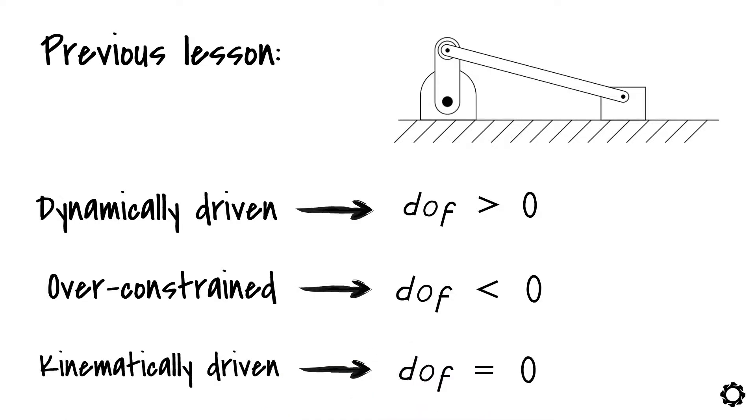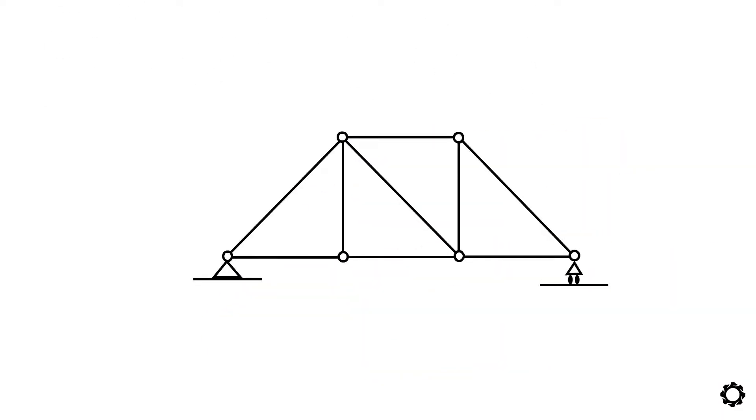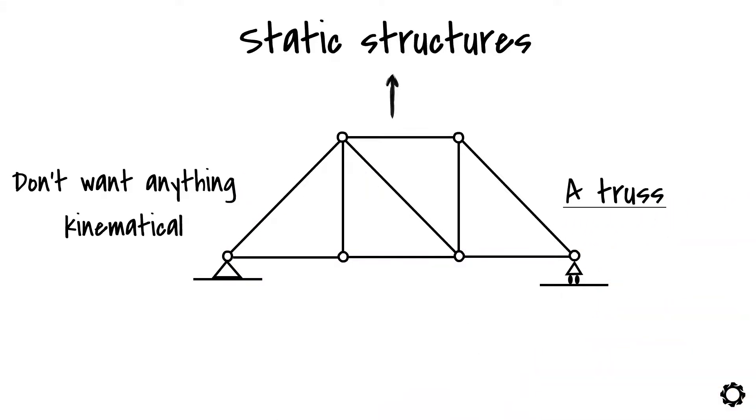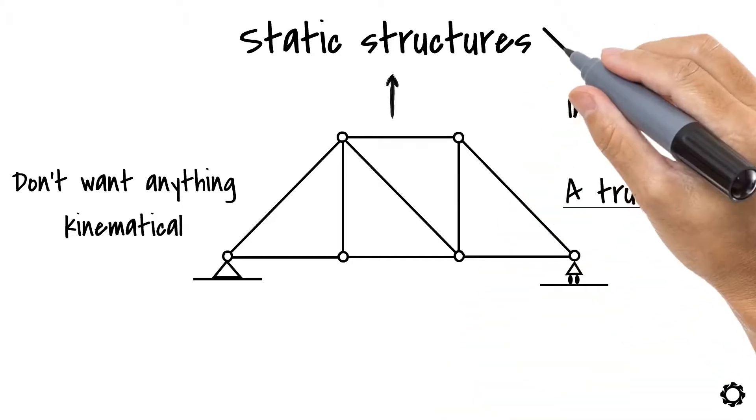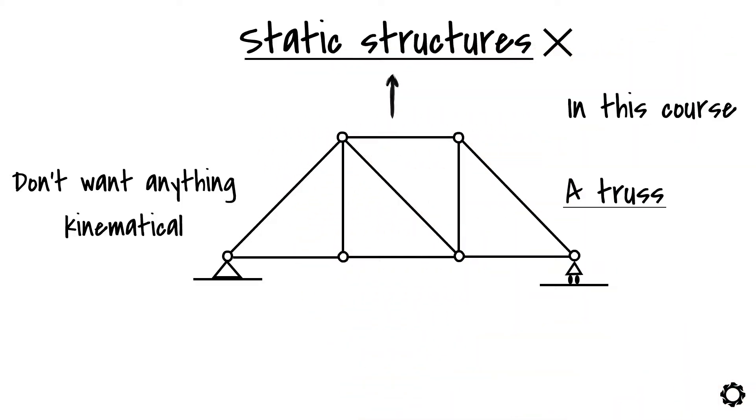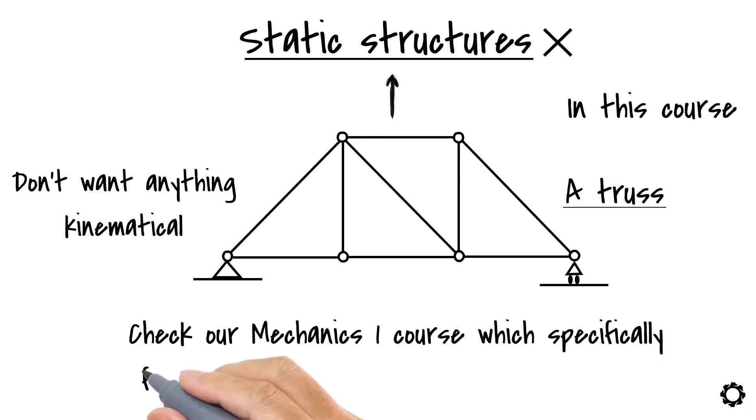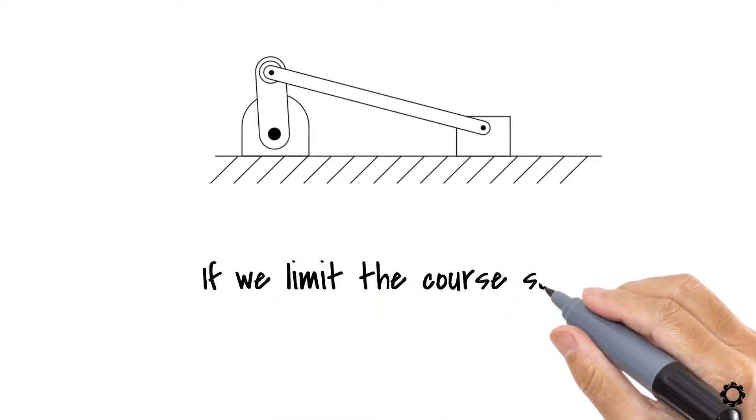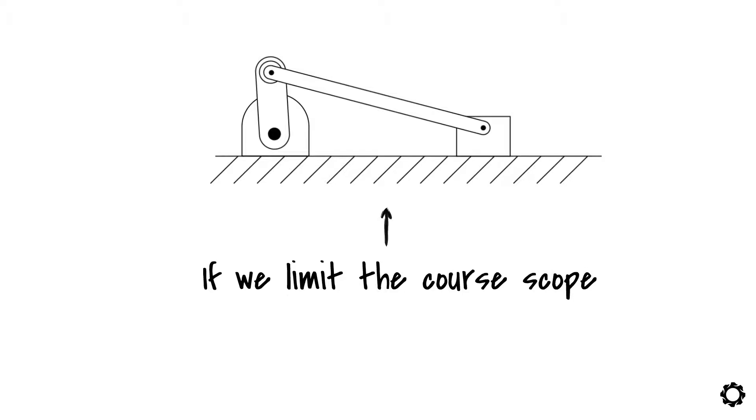Now let me stop right there and expand this thought a little. You see, kinematically means that something is related to movement. However, we have systems with zero degrees of freedom. These systems are static structures, a truss for example, and we definitely don't want anything kinematical in a truss. The reason I bring up this point is because in this course we are not dealing with static structures. But if you are curious to learn more about static structures, check out our Mechanics 1 course which specifically focuses on different statics related topics. If we limit the core scope to moving mechanisms, then we need to agree that we are safely referring to kinematically driven mechanisms when the system has zero degrees of freedom.